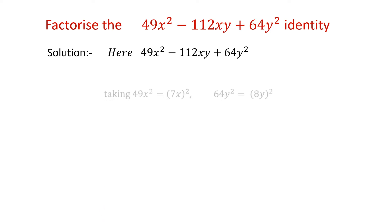Now let's see the next step. Here the basic step I need to explain. Taking 49x square as 7x whole square and 64y square as 8y whole square.